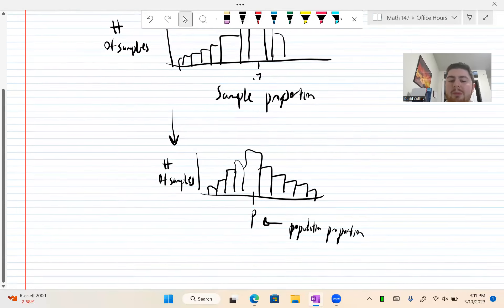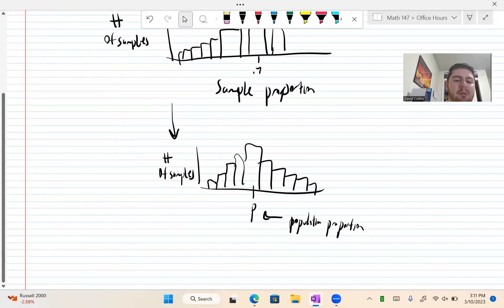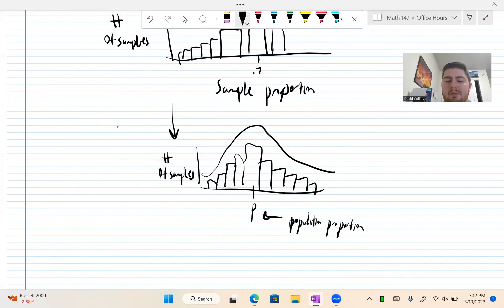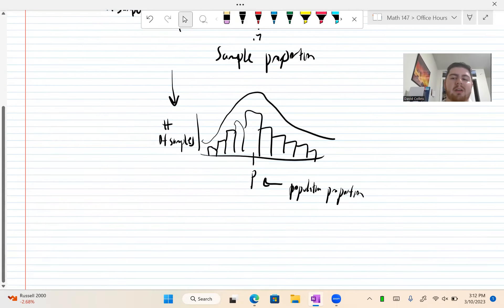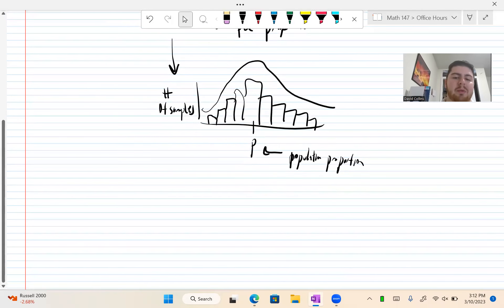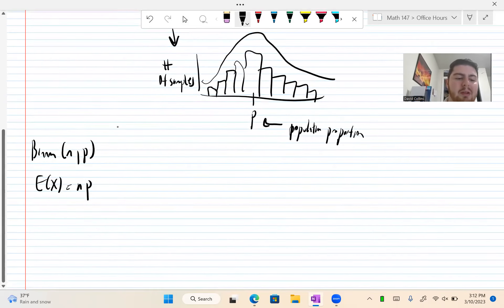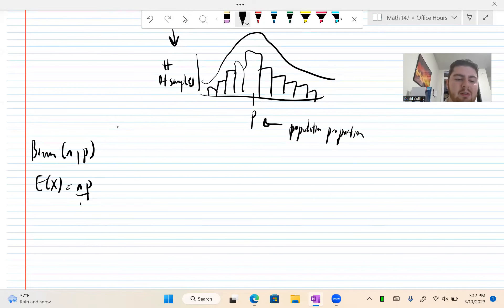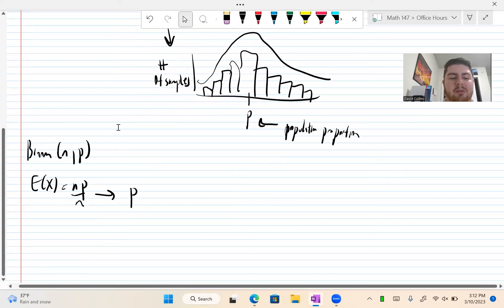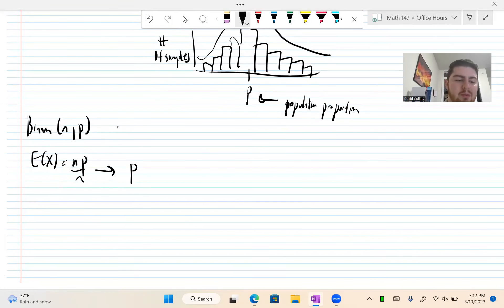And once it becomes unimodal and symmetric, we can approximate this by a normal because we have a nice bell curve view. This distribution up here is a normal with mean P, population proportion.